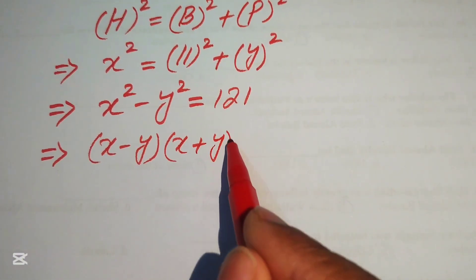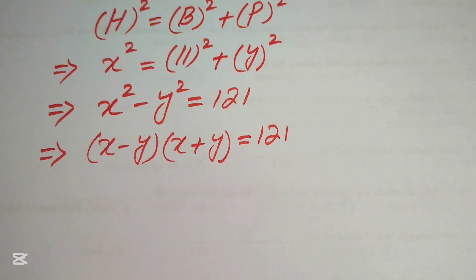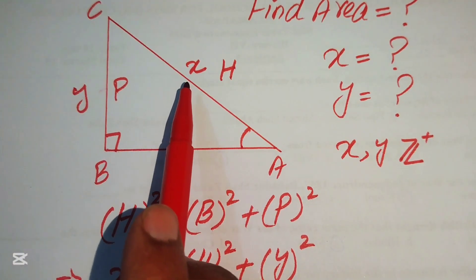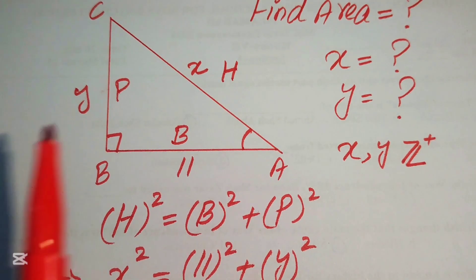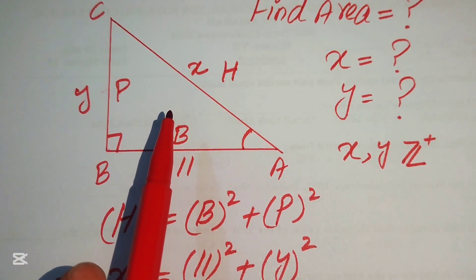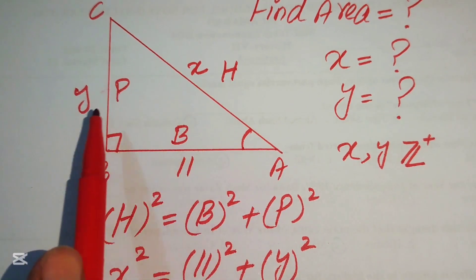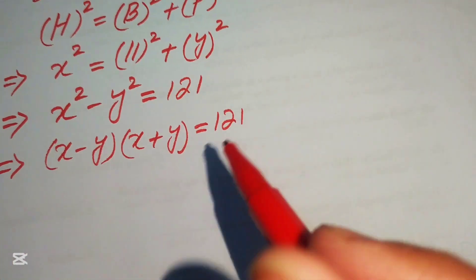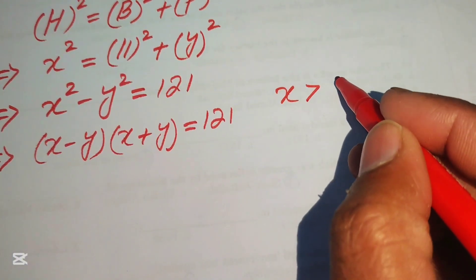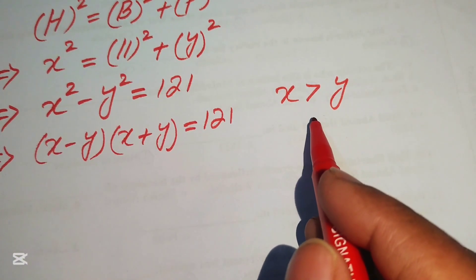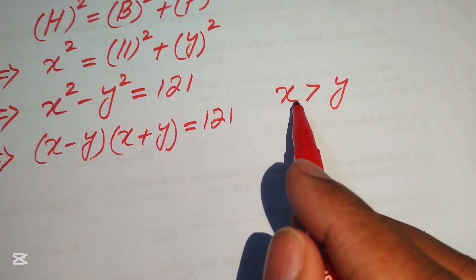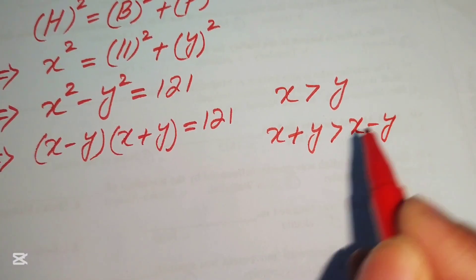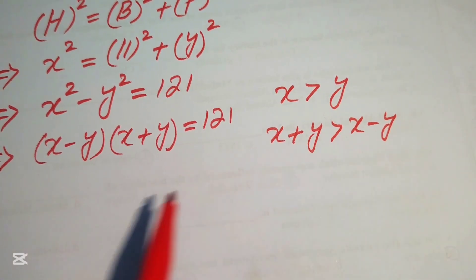We apply the difference of squares identity: x squared minus y squared equals (x minus y)(x plus y), and this equals 121. Now, since x is the hypotenuse, it is the longest side of the right triangle, so x is always greater than y. This means x plus y is always greater than x minus y.